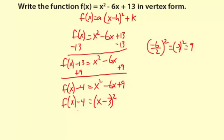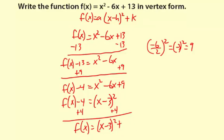Now I'm simply going to add 4 to both sides to put it back in function form. f(x) = (x - 3)² + 4. This is the exact same function that we started with, just written in a different form.